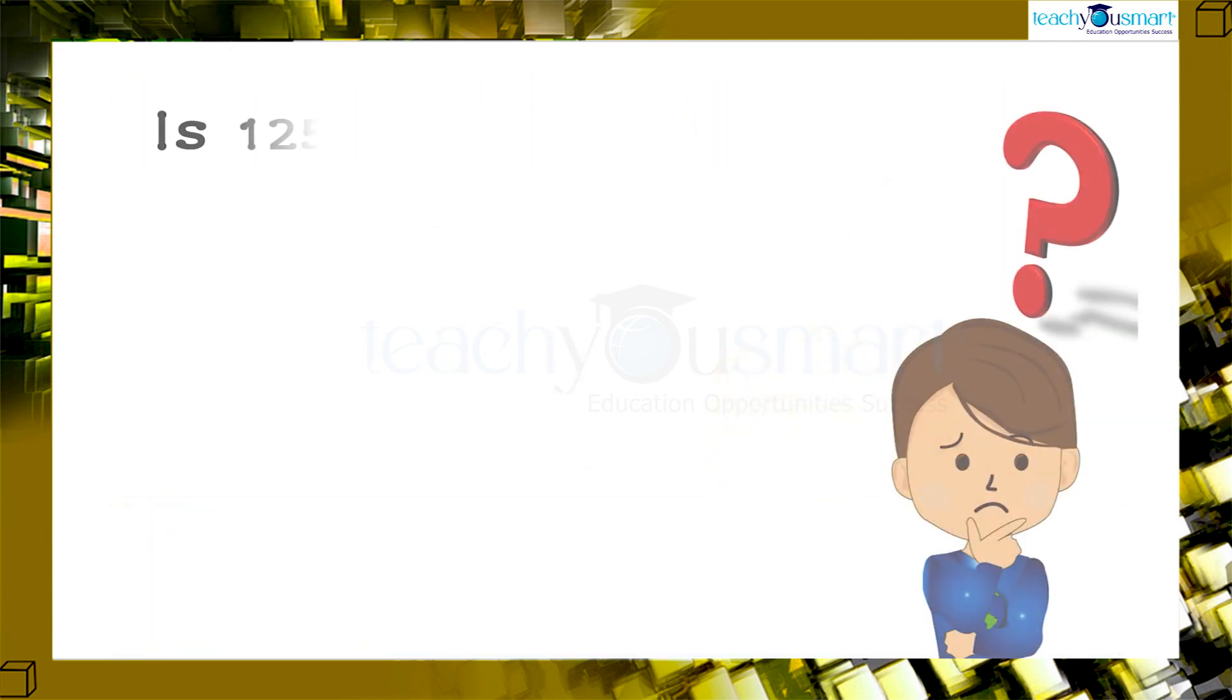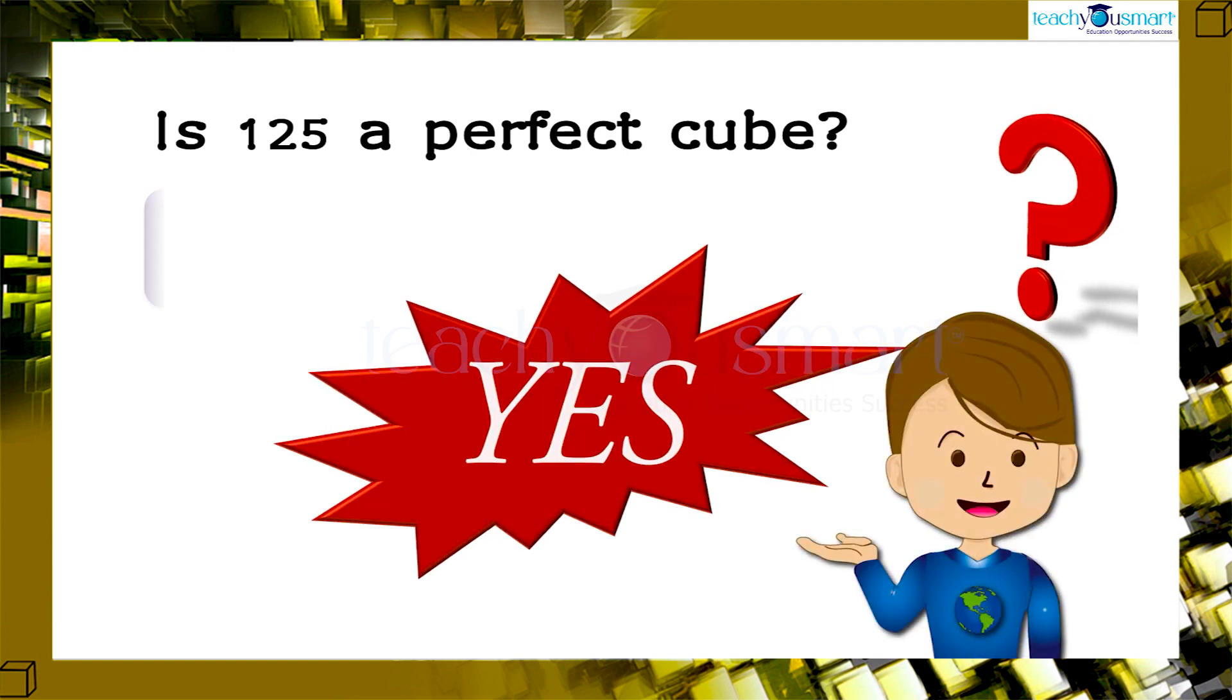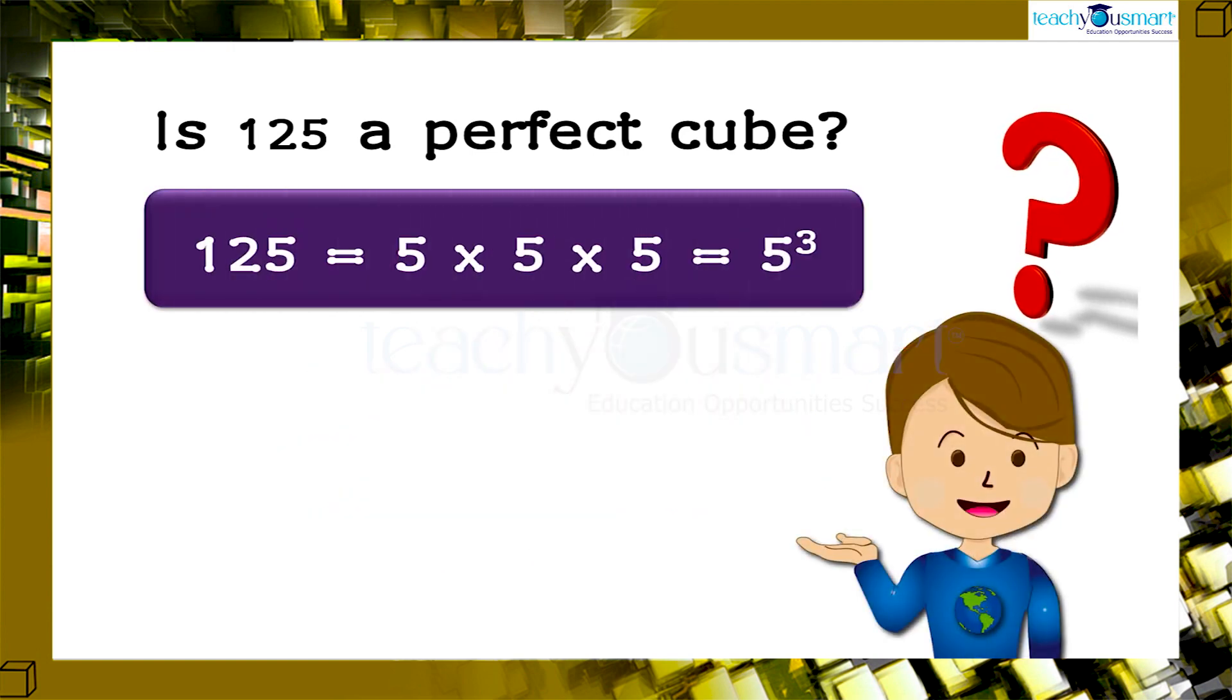Is 125 a perfect cube? Yes, because 125 can be expressed as 5 multiplied by 5 multiplied by 5 equals 5 raised to 3. So, it's a perfect cube.